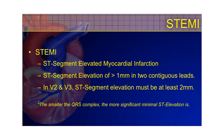Your typical STEMI criteria is ST-segment elevation of greater than one millimeter in two contiguous leads. The more advanced criteria includes that in V2 and V3, you need two millimeters or more, because there's a normal variation of ST elevation in many people in those leads where the J-point is more diffuse. ST elevation is proportionate to the size of the QRS complex, so a very small or low-voltage QRS with just one millimeter of elevation could be much more significant.